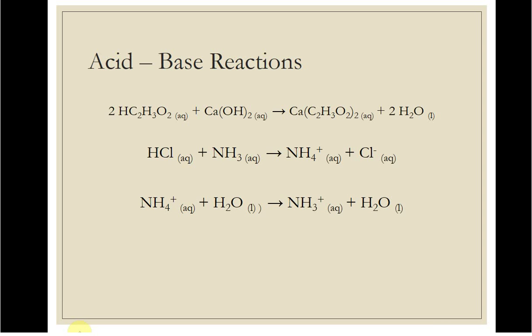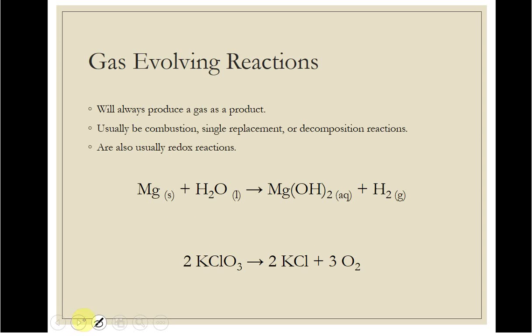Here's other examples of acid base, guys. Acetic acid, calcium hydroxide reacting to produce calcium acetate, a salt, and water. This is how these work, and so as long as you have an acid and a base on the left, and an ionic compound, and water on the right, you end up getting acid base here.